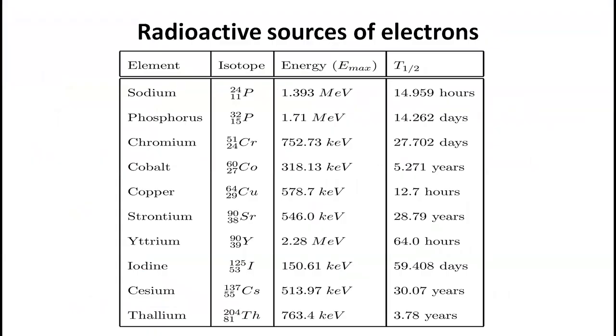Most nuclides produced by neutron bombardment of stable materials are beta active. Therefore, a large number of beta emitters are readily available in a reactor.